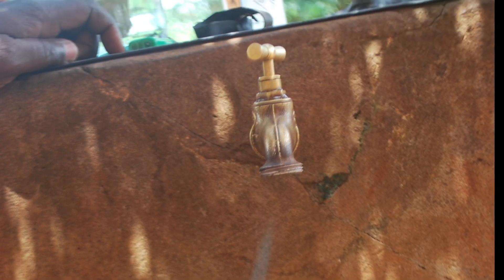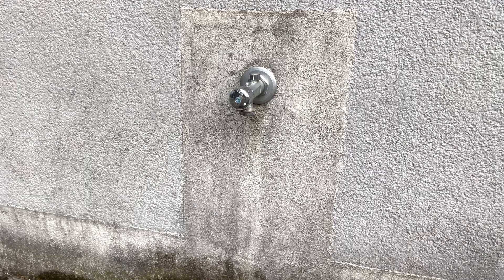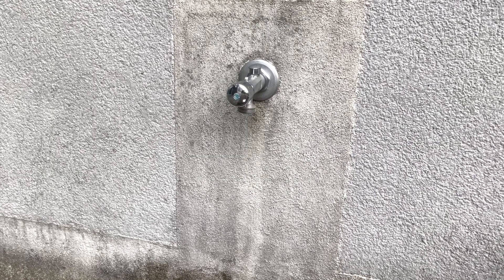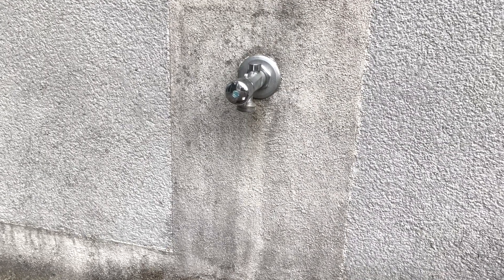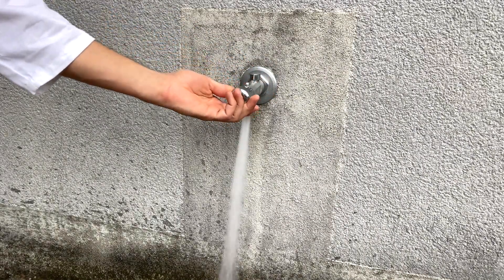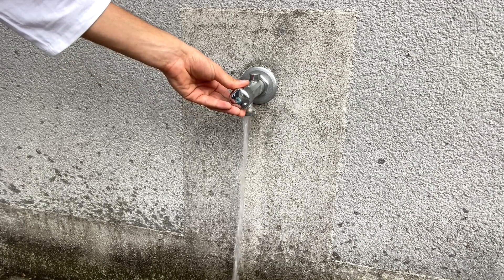If possible, sterilize it with a Bunsen burner. If the fitting cannot tolerate heat or a portable Bunsen burner is not available, wait three minutes for the alcohol to react and evaporate. Run the water at full power for twenty seconds.